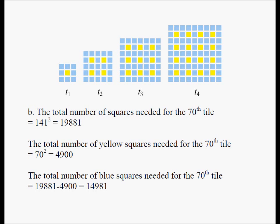Now we are working on Part B. Part B wants us to find out how many blue squares will be needed for the 70th smallest tile. In Part A, we found out how many yellow squares are needed for the 70th smallest tile, and now we are going to find out how many blue squares are needed.